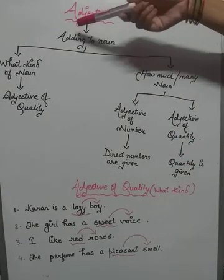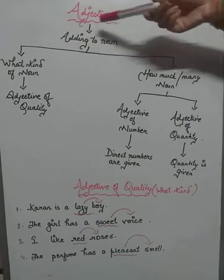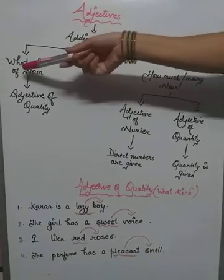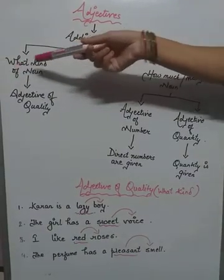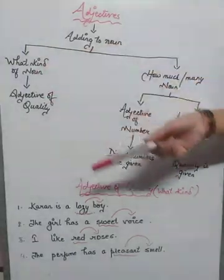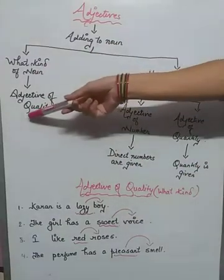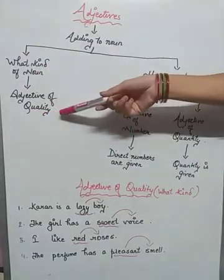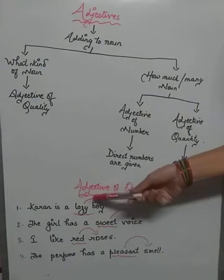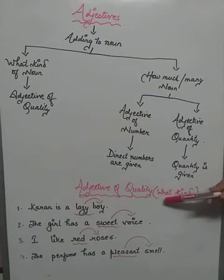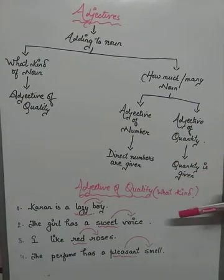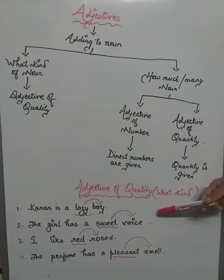Adjective means adding to noun, and when it tells us what kind of noun — when it describes the noun as what kind — it is called adjective of quality. Adjective of quality: what kind? Let us understand with some examples.